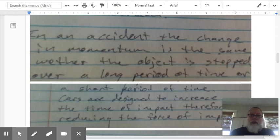But if the object comes to a stop, its change in momentum is whatever its initial momentum was minus zero, because its final momentum is zero. So it doesn't matter how it stops. You have the same change in momentum.